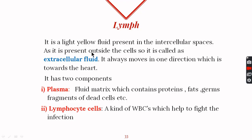Lymph is the light yellow colored fluid present in the intercellular spaces, so it is called extracellular fluid. Just like blood, it is also made up of two components: plasma and cells. Its plasma is a fluid matrix which contains proteins, germs, and fragments of some dead cells. Unlike blood, lymph contains only one kind of cell, which are the WBCs called lymphocytes, and they function to help fight infection.